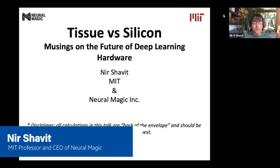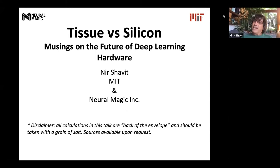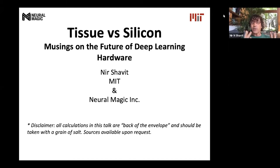Hi everybody. Today my talk is going to be a reflection of the work I've been doing over the last 30 years in multi-core computing, and then the last seven or eight years in which I've been really involved in computational neurobiology in an area called connectomics. I'd like to fuse ideas from both of these areas — from neurobiology and from multi-core computing — and challenge the way we are designing hardware and software for machine learning today.